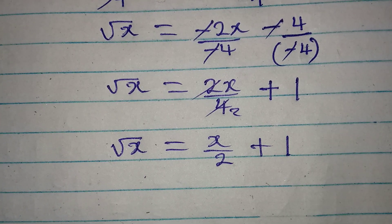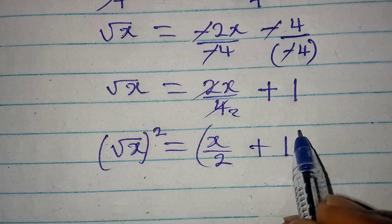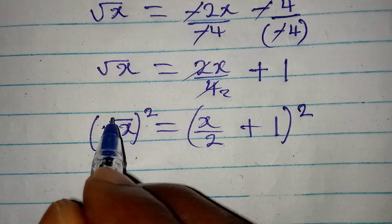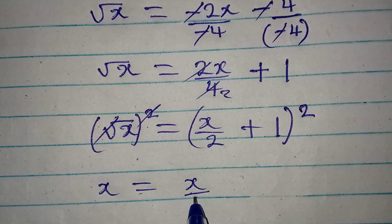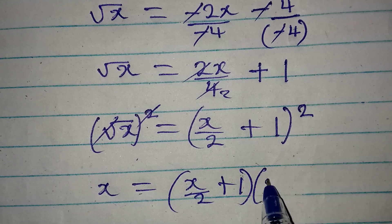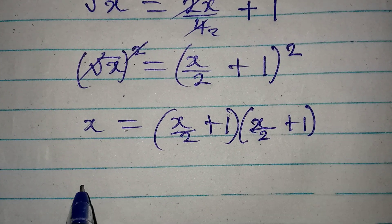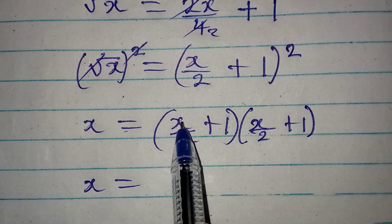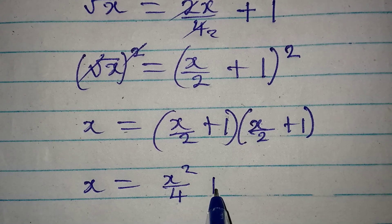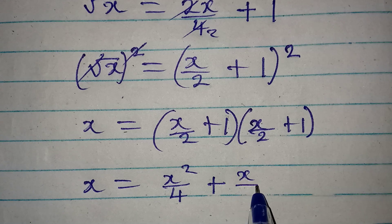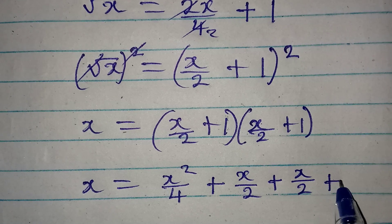Since we are looking for the value of x, we square both sides again. The square root cancels, and x equals x over 2 plus 1, times x over 2 plus 1. Expanding: x over 2 times x over 2 gives x squared over 4, plus x over 2, plus x over 2, plus 1 times 1 which is 1.